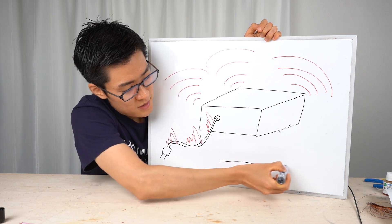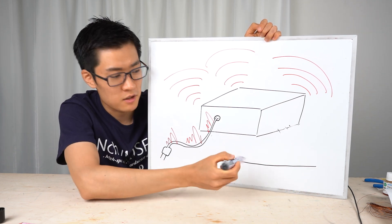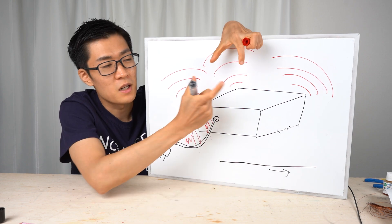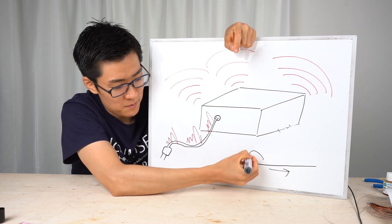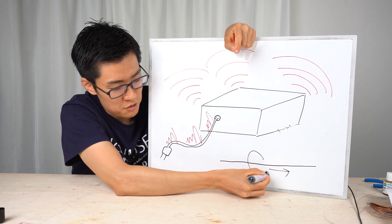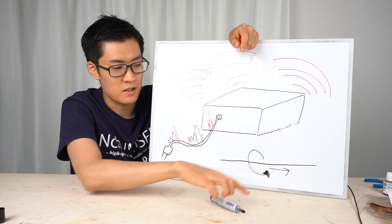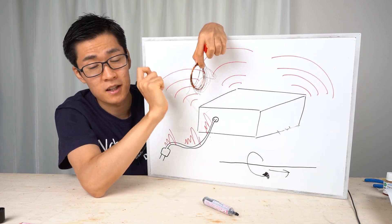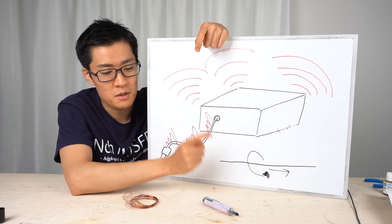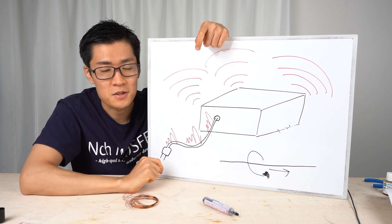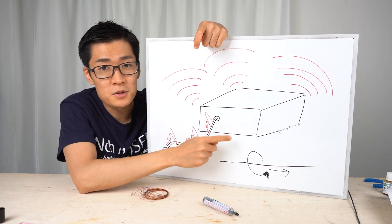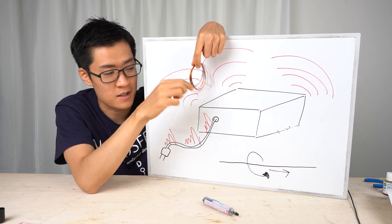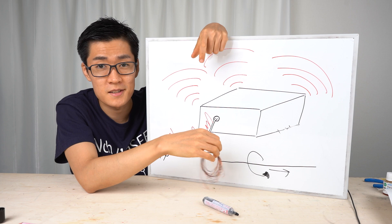Let's say there's a wire here with a current passing through it. When a current passes, a magnetic flux is generated around the wire — we learned this at school. When you pass a current through a coil, a magnetic flux is generated around it. If there's another wire nearby and the magnetic flux interlinks with it, a voltage is generated in that wire. That is induced noise.